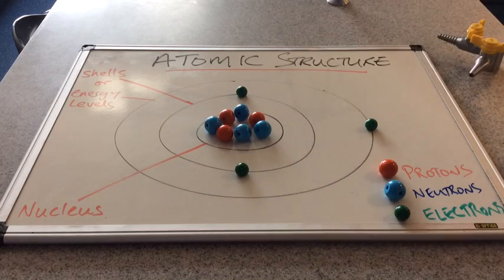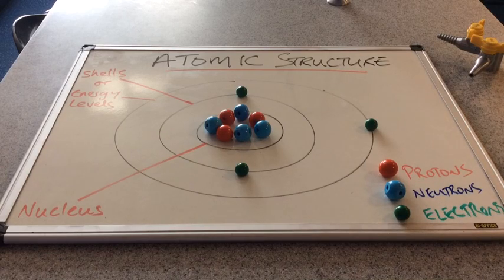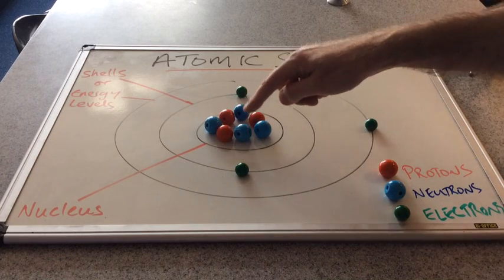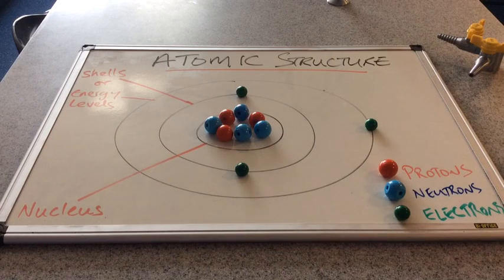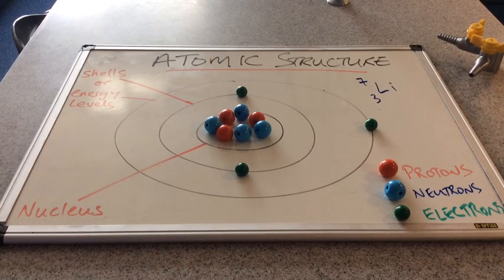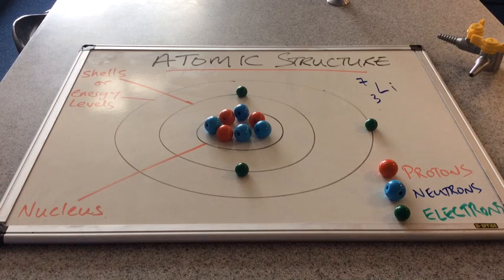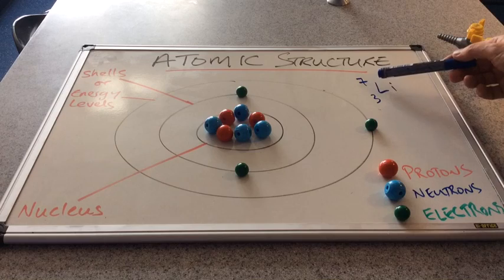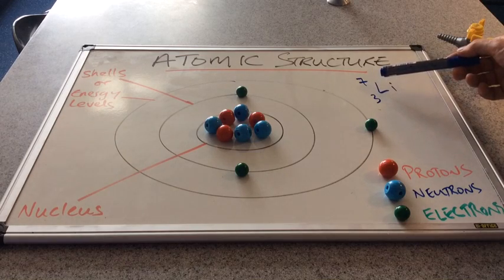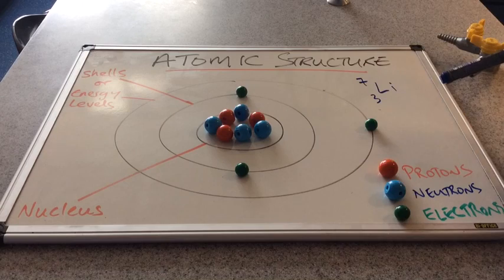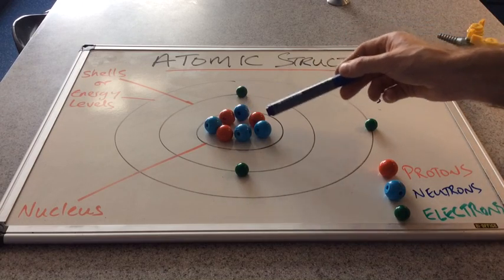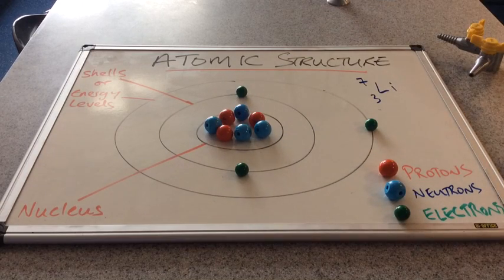We can't change the protons or the electrons otherwise it wouldn't be lithium. It's the neutrons that change. So there's more than one form of an atom. This form of lithium that we've got up on the board at the moment is what we call lithium 7. That's because it's got a mass number of 7. What's causing the mass number of 7? Three protons. That's what makes it lithium with those four neutrons added on and gets us the mass of 7.